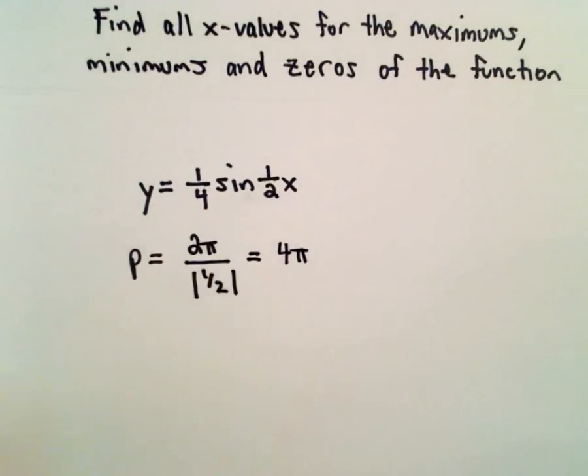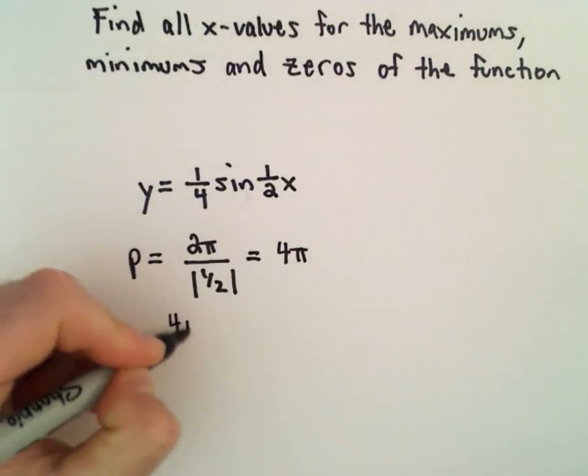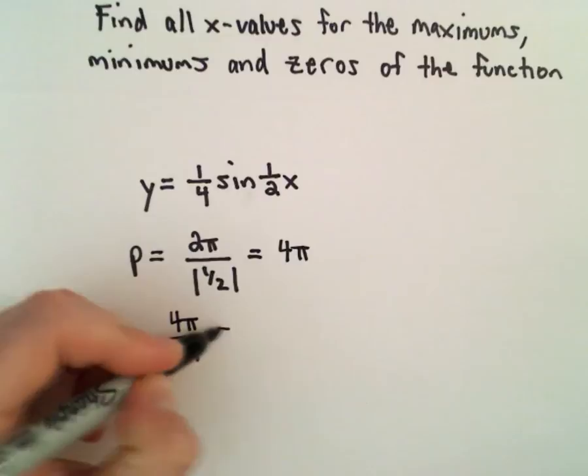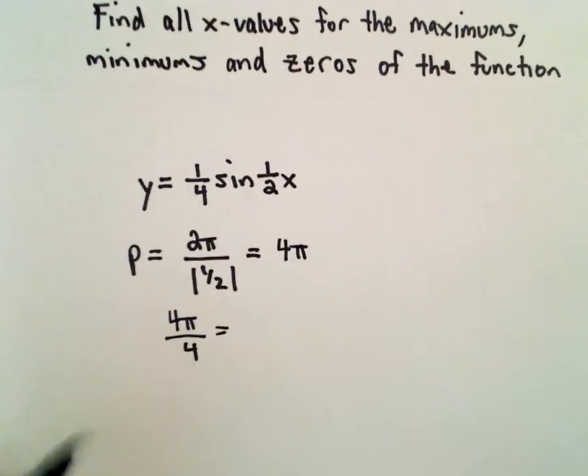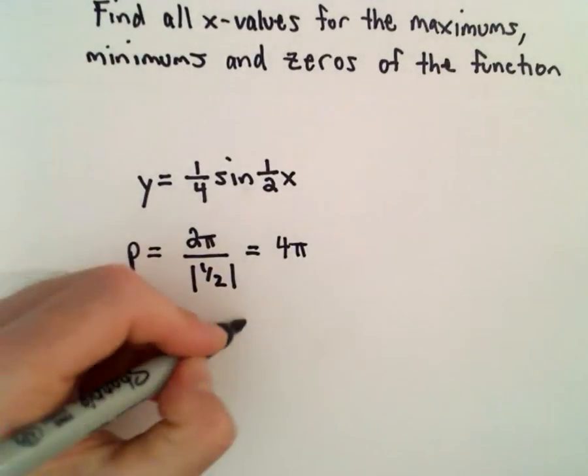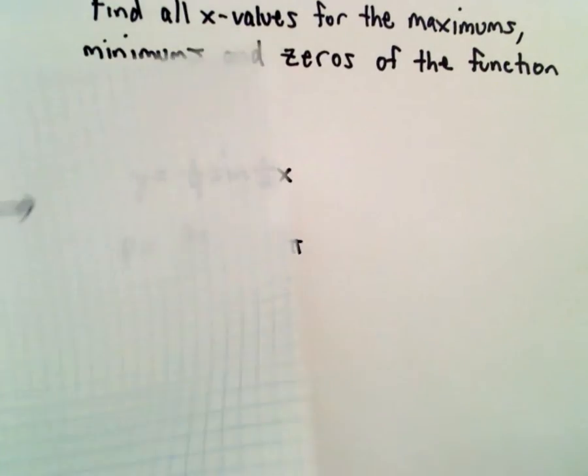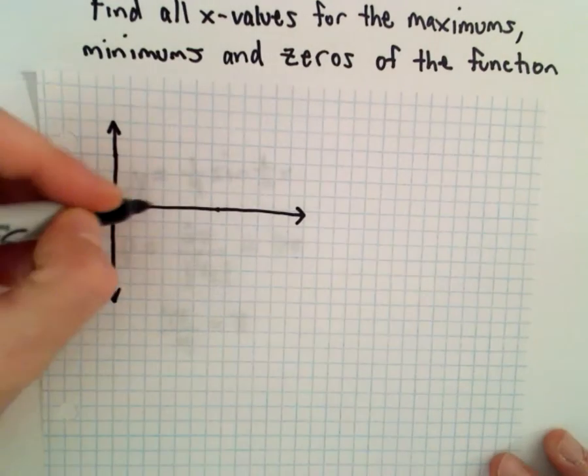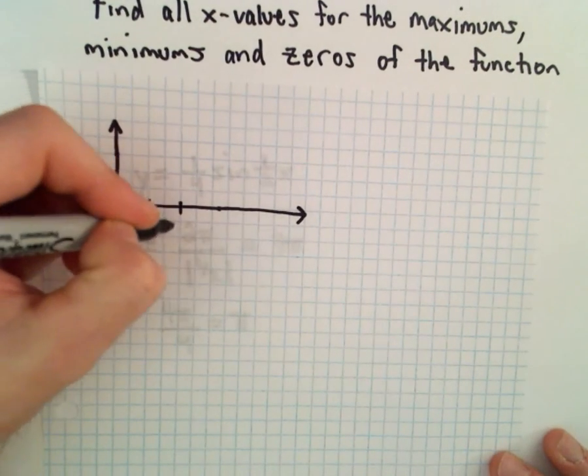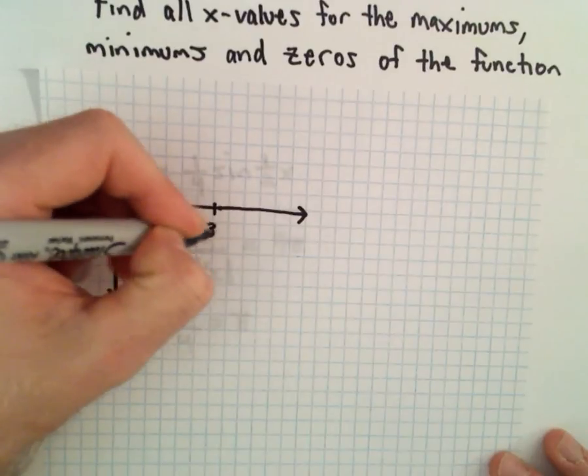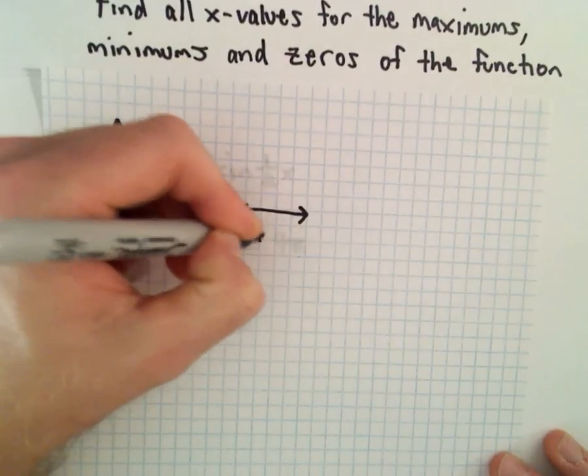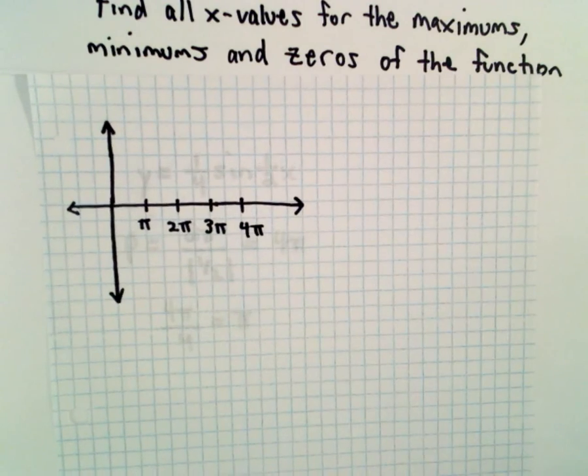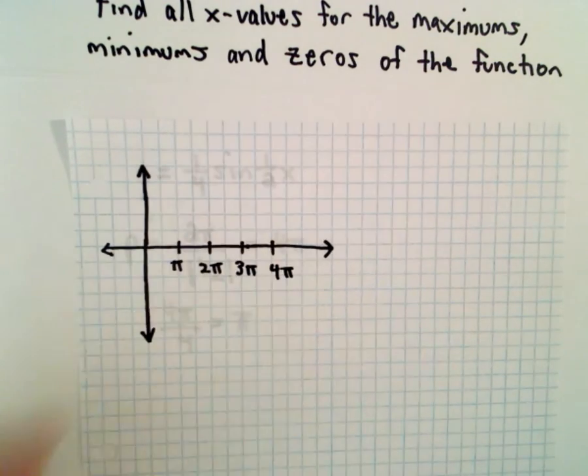The amplitude really doesn't matter for these. So I'm going to use a graph here to think about them. So I'm going to think about my increments. Four pi, I take the period, divide it by four. That'll give me pi. So my increments are going to be in terms of pi. So one pi, two pi, three pi, four pi. And again, this is just a very rough sketch to help me identify these.